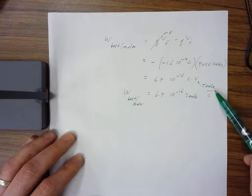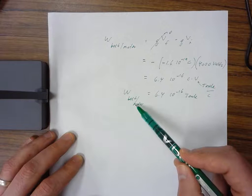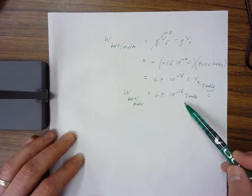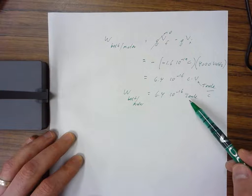A volt is a joule per coulomb, so coulombs times volts equals joules. The belt and motor do a positive amount of work, which makes sense because they have increased the electric potential energy of this system.